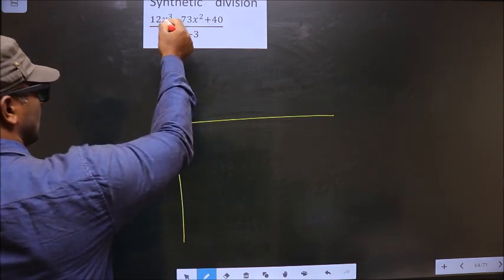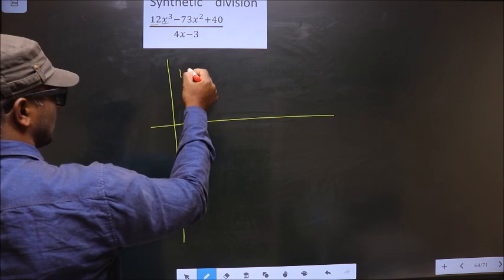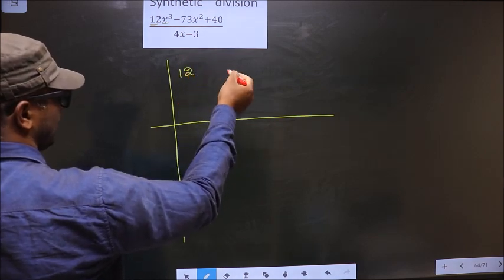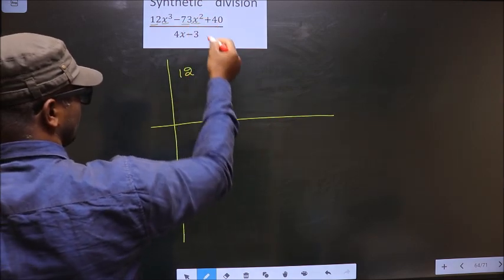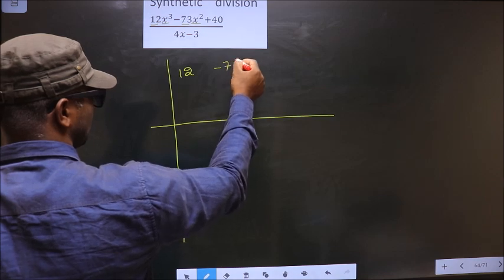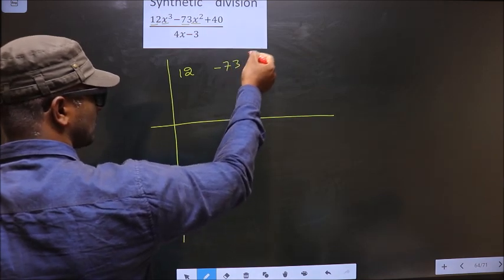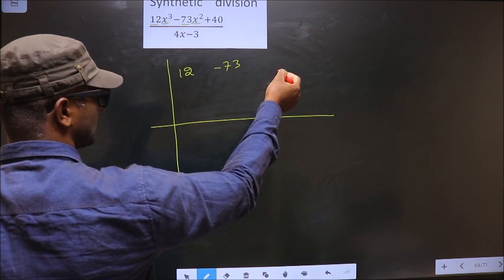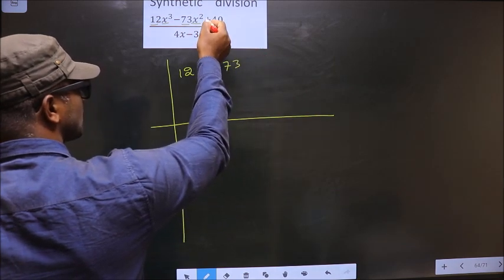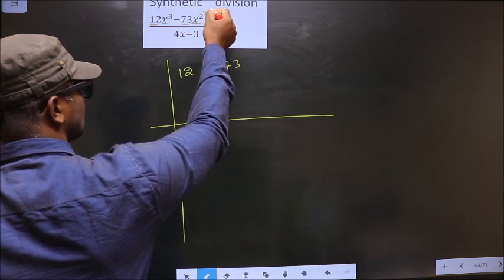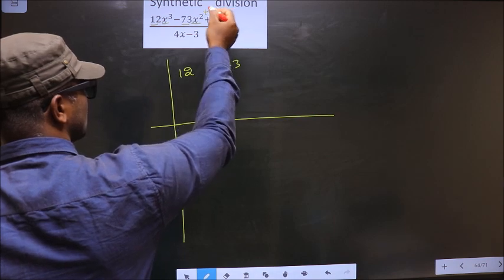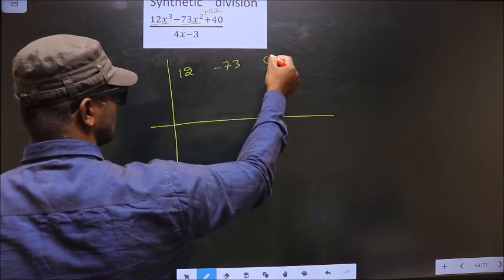Here we should write coefficients taken from the numerator. Starting with x cube coefficient, that is 12. Next, x square coefficient minus 73. After x square coefficient, now we should write x coefficient. But we don't have x coefficient, so you take 0 times x. So now x coefficient is 0.